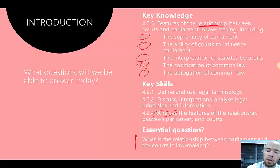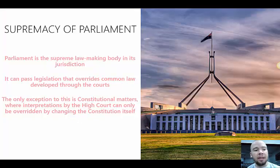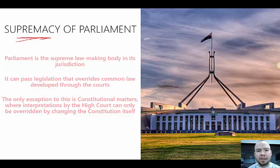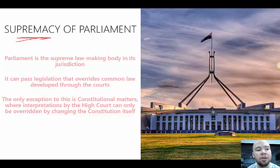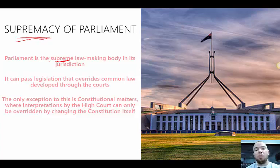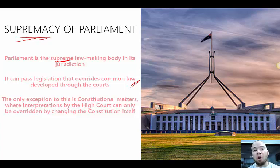The essential question is: what is the relationship between parliament and the courts in lawmaking? The first point is the supremacy of parliament. Parliament is the supreme lawmaking body in its jurisdiction — whatever parliament is given power over, it is supreme in those areas. That means it can override the courts. If the courts create a new precedent and parliament thinks that shouldn't apply in society, parliament can make a law that overrules that precedent — not changing the decision in that case, but for future cases.